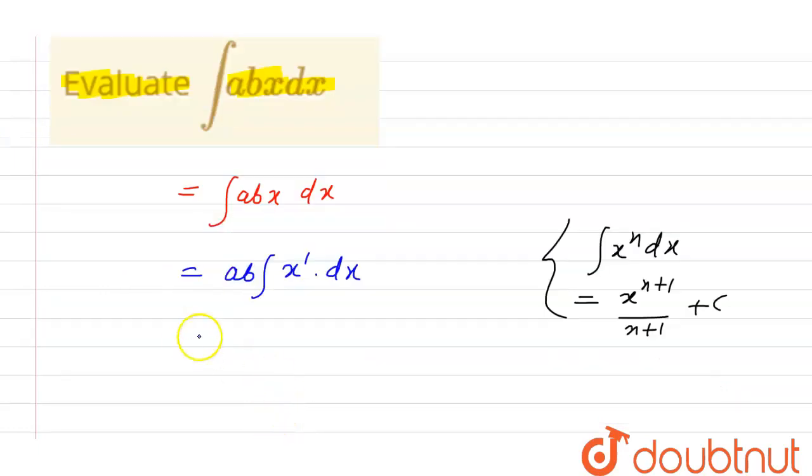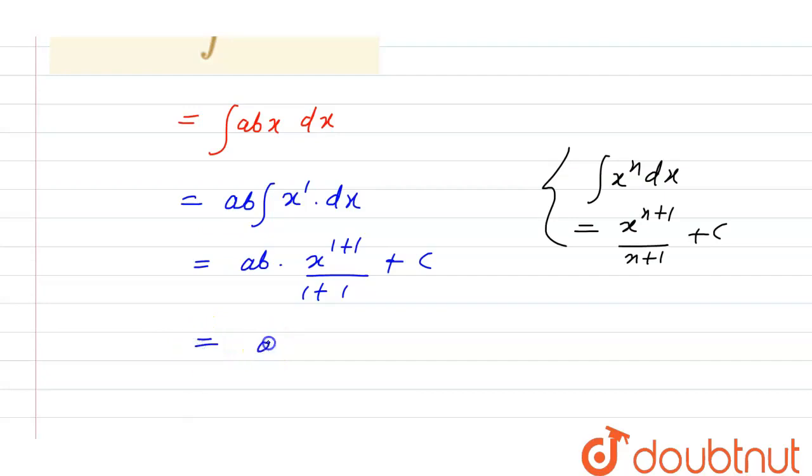So this is equal to ab times x raised to the power 1 plus 1 divided by 1 plus 1 plus c, which equals ab into x raised to the power 2 divided by 2 plus c. Thank you.